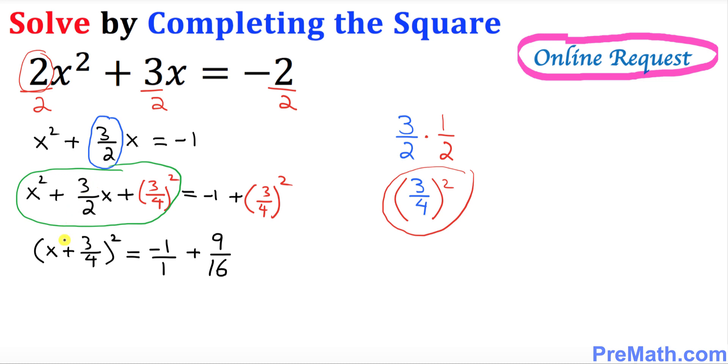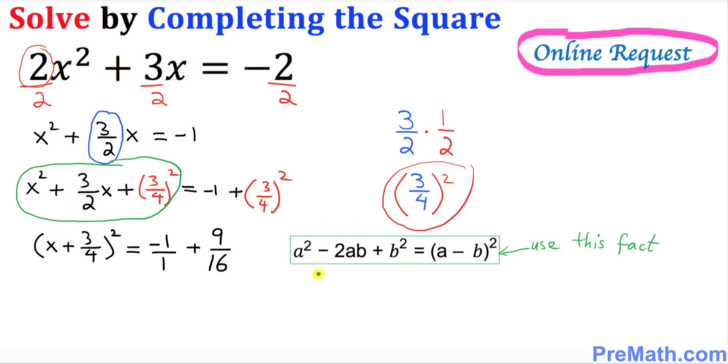Now you might be wondering how did I get this thing by completing the square. So we have used this fact, as you can see over here, a minus b squared could be written as a squared minus 2 times a b plus b squared. So in other words, this x came right up here, this 3 over 4 showed up right up here, and whatever this sign is, this showed up right here. So far so good.